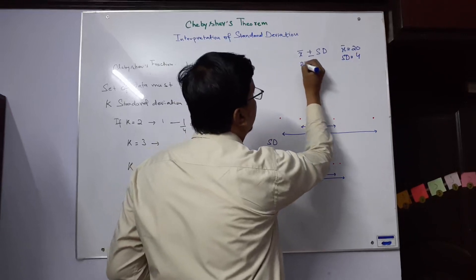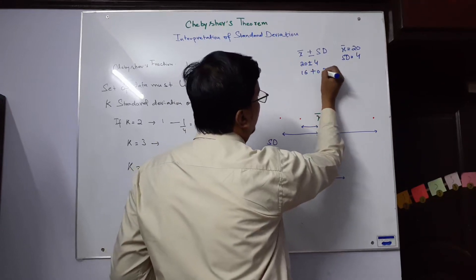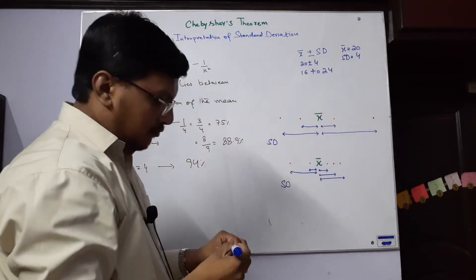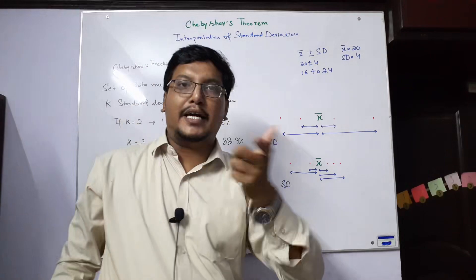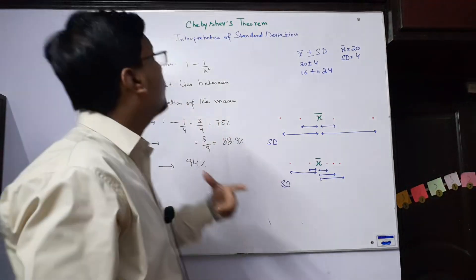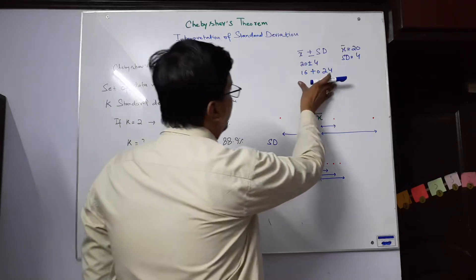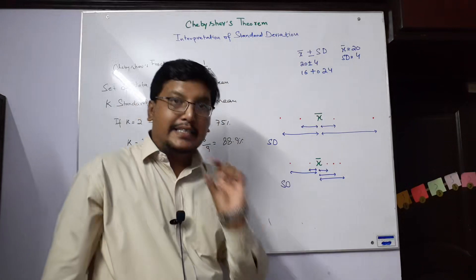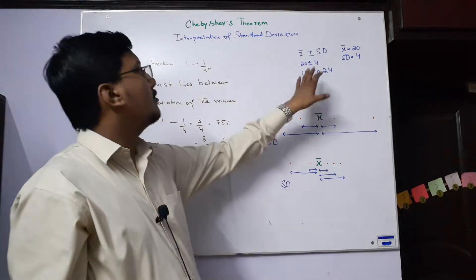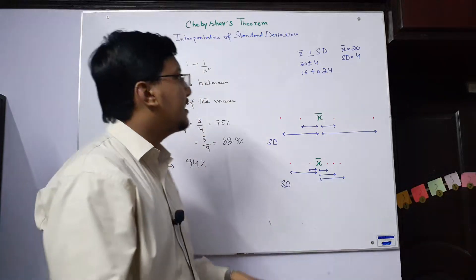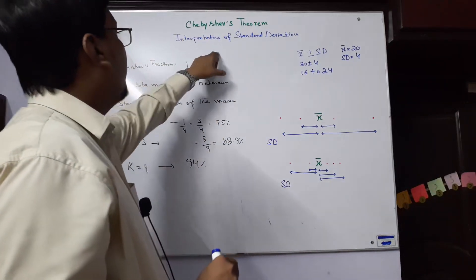Then x-bar plus or minus SD means 20 plus or minus 4, that is the interval from 16 to 24. We can say all the values will be between 16 and 24. Now Chebyshev's theorem works here and says that we cannot simply assume all data falls in this bracket — we are not sure that the data values fall in this interval just from the standard deviation alone.